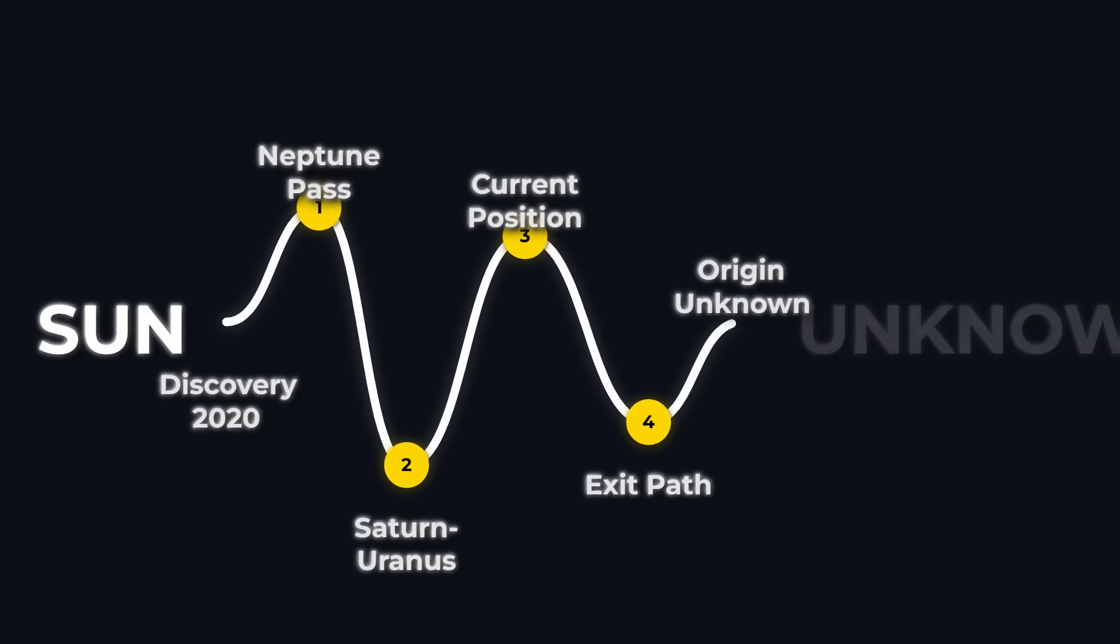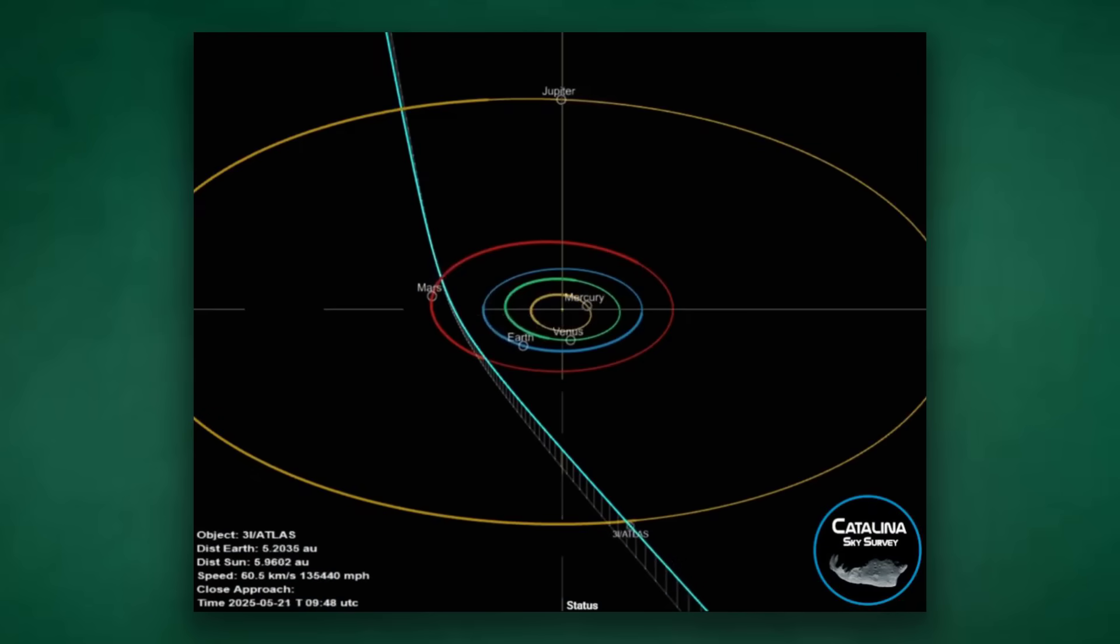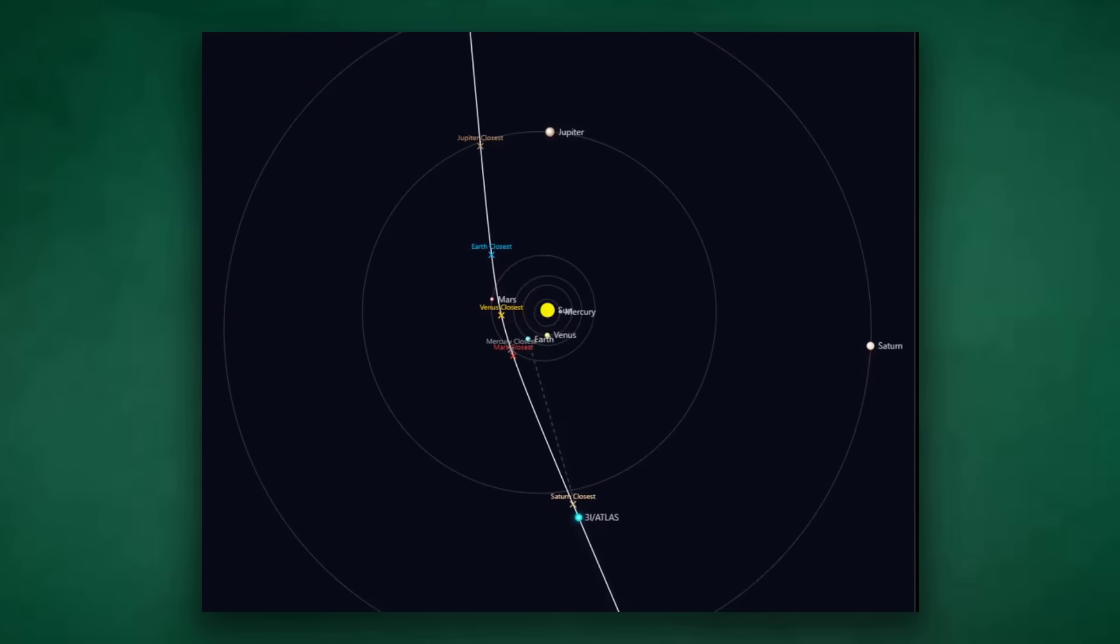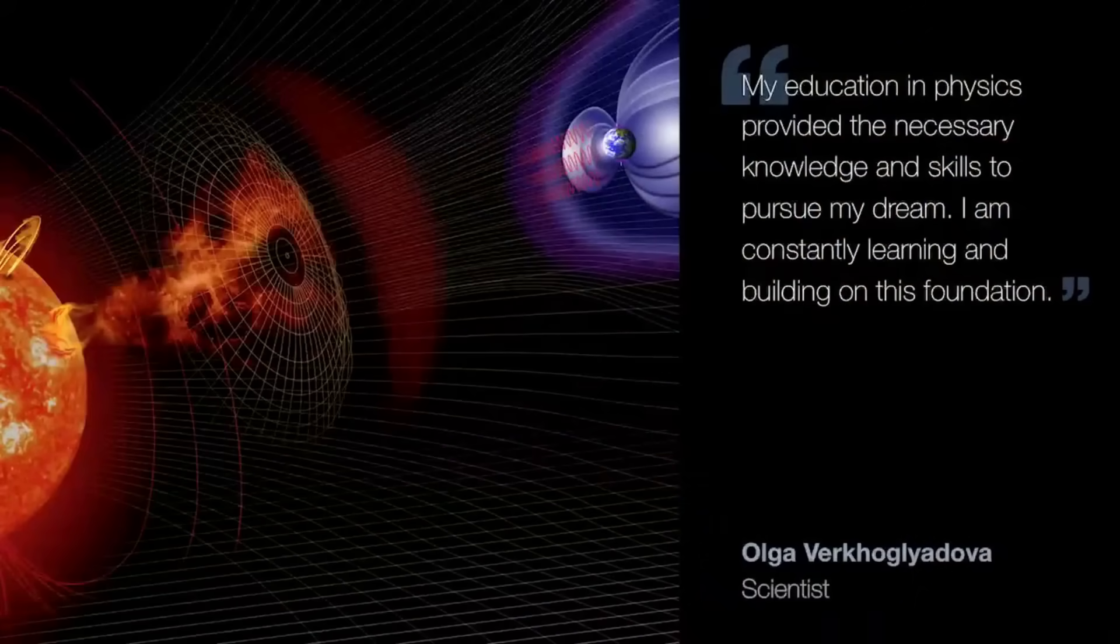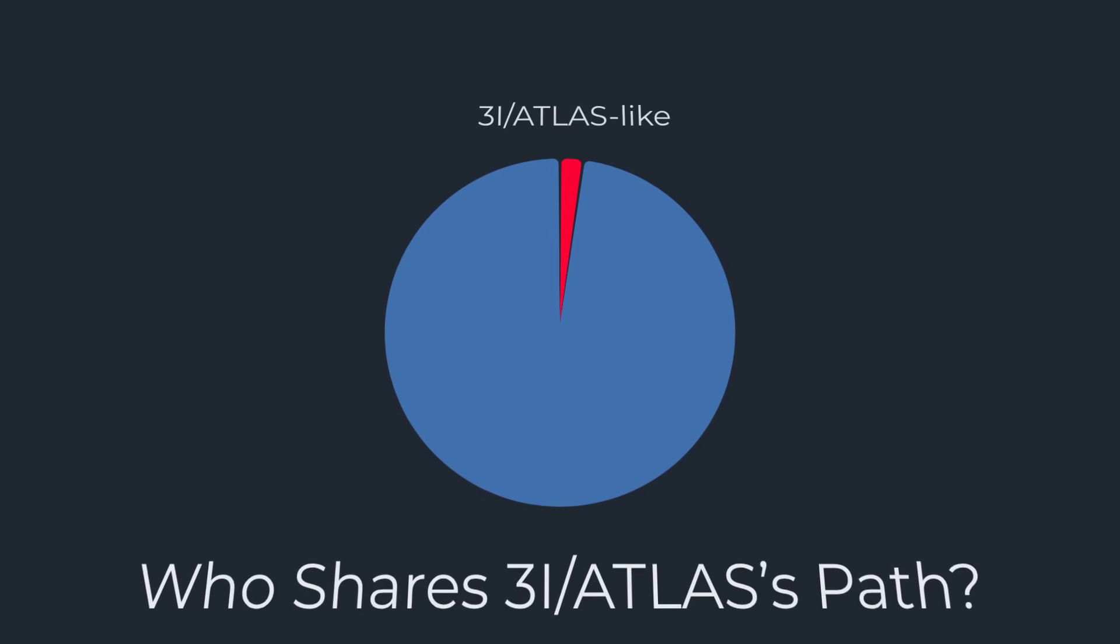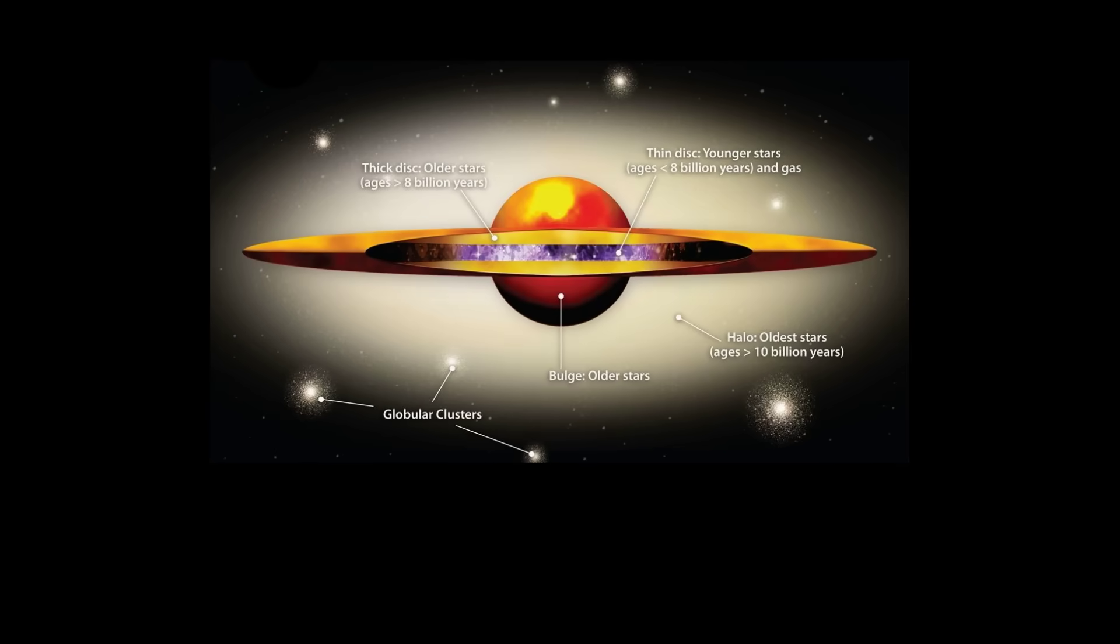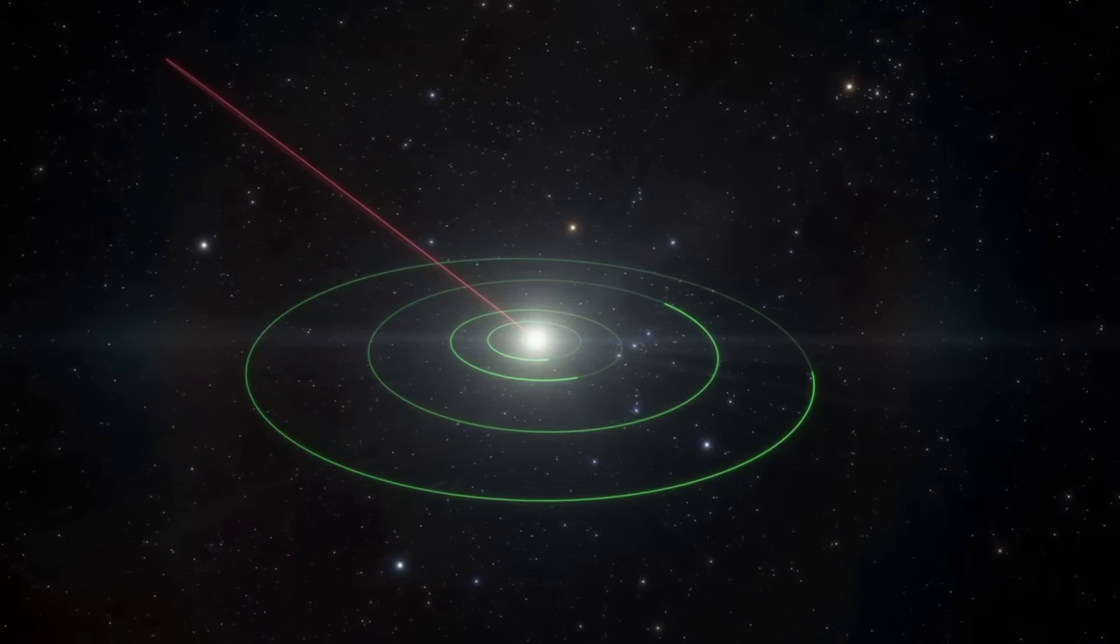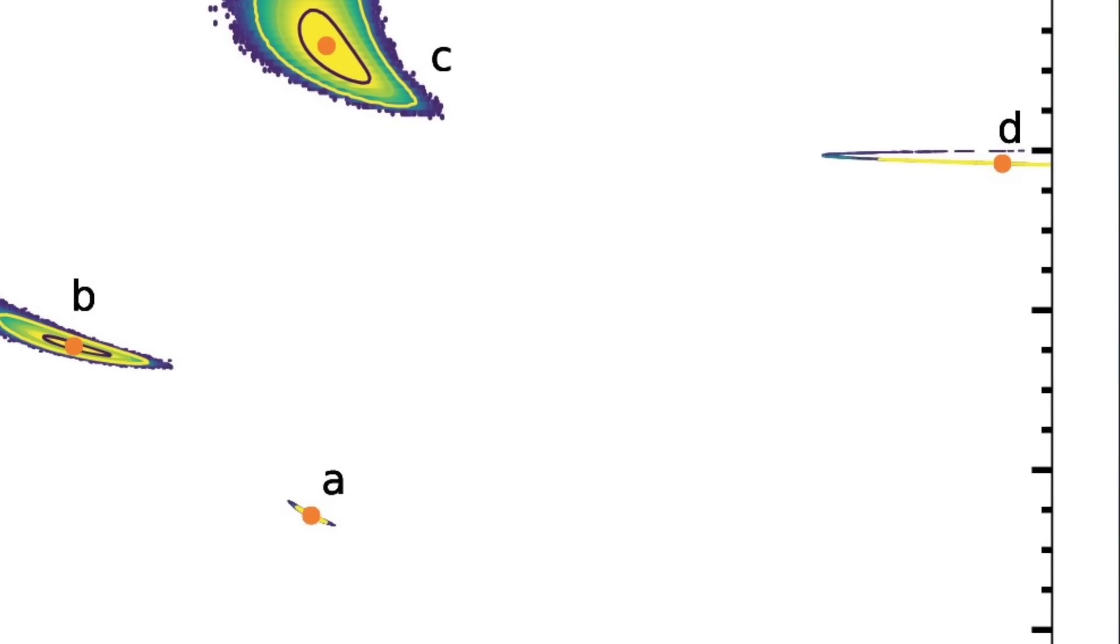Tracing the path of 3I/ATLAS across the solar system raises questions that reach far beyond our neighborhood. Its orbit is a statistical outlier, retrograde, tilted at nearly 175 degrees, and cutting through the ecliptic in a way that almost never happens by chance. Monte Carlo simulations run by planetary scientists show just how rare this geometry is. Only a tiny fraction of interstellar objects would arrive on such a path. Some models point to the thick disk of our galaxy, a region packed with ancient stars and relics, as the most likely launch site. But even with backward integrations and millions of simulated trajectories, the trail vanishes into a cloud of probabilities.